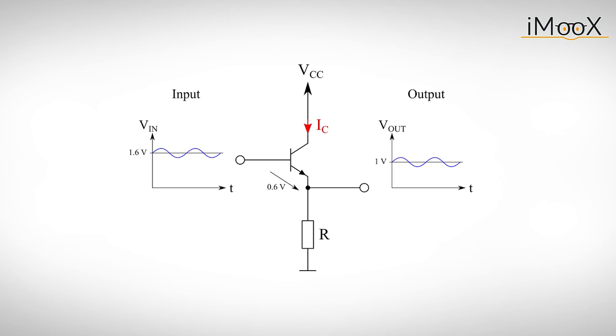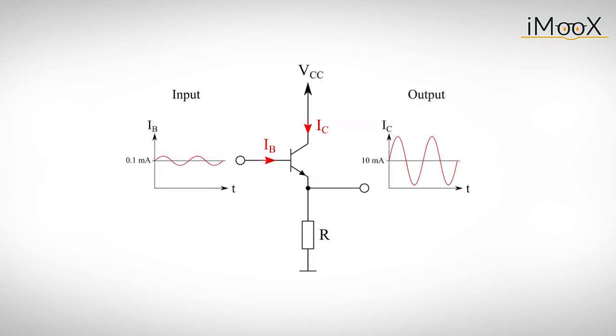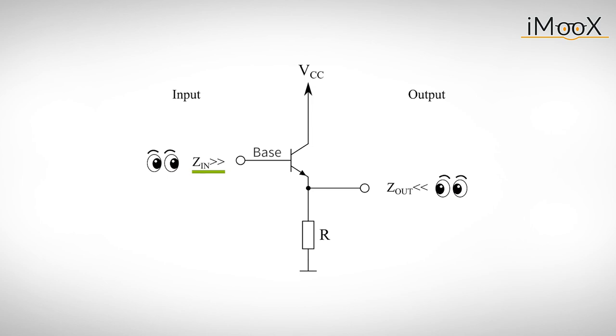At first glance, that doesn't seem like an impressive circuit, until you realize two things. One, the output current IC is basically independent of our supply voltage, as long as we remember to obey our two rules. And two, a small change of the input voltage implies a small change of the input current, which causes a big change of the output current. One could also say that the input impedance looking into the base is much larger than the output impedance looking into the emitter.